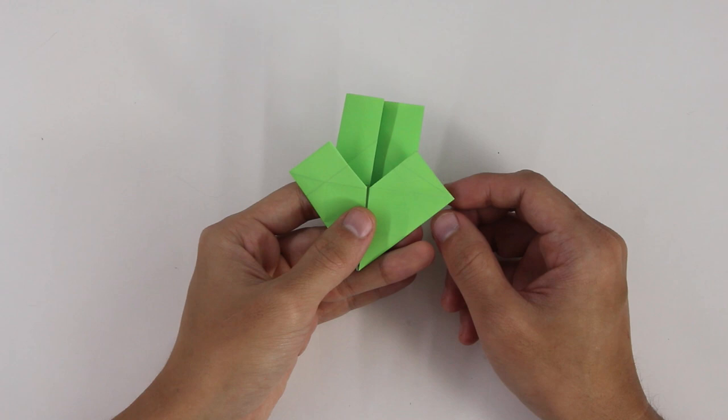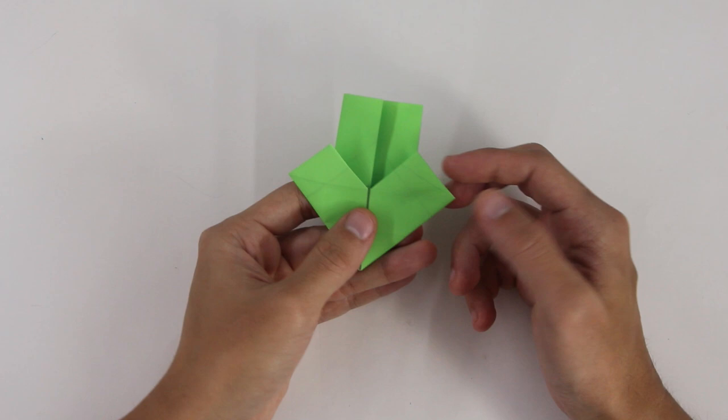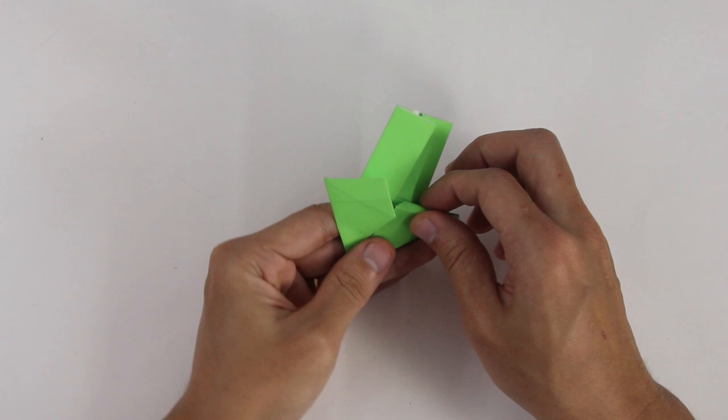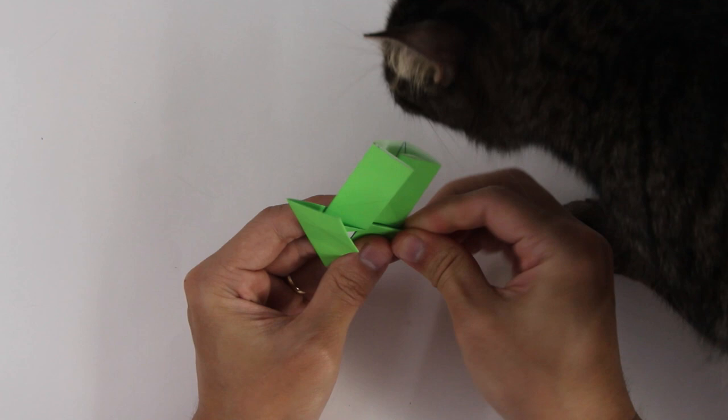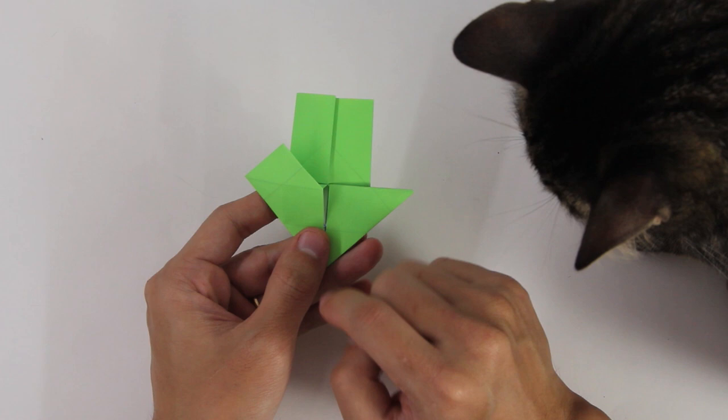Make mountain fold along these lines, inserting the flap into these pockets. Do the same thing here on the other side.